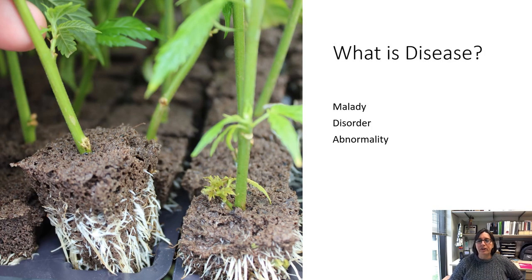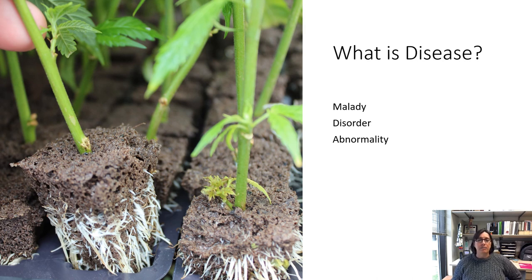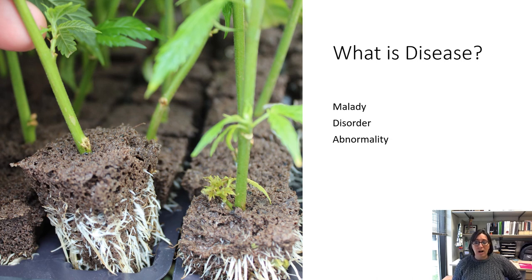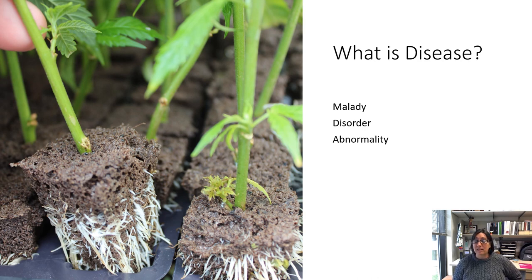Let's start at the very beginning. What is a disease? A disease is a disorder — a plant's reaction to something. We can say malady, abnormality, or disorder. It's the wilt, the rot, the necrosis or the chlorosis. That is the plant's reaction. That's what disease is.